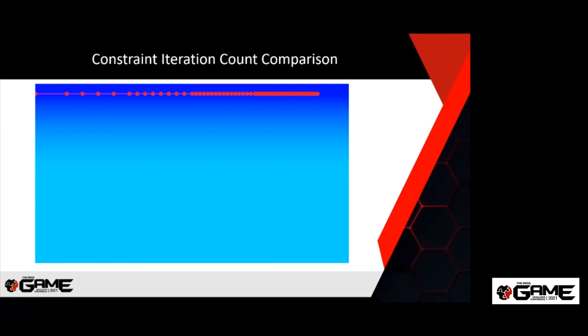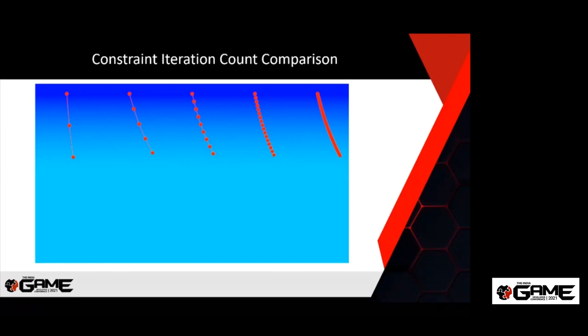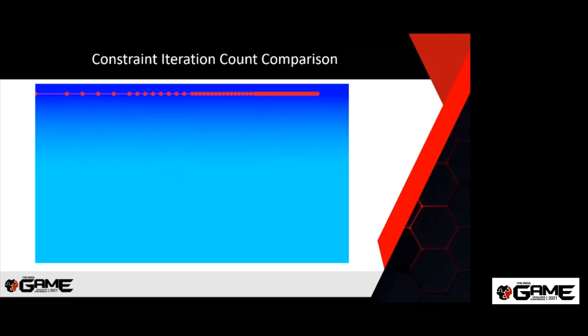More constraint solving iterations means more computational cost. With only one iteration per frame the ropes look very elastic and stretchy, while with 64 iterations they're much stiffer. If you want to preserve the length of your rope and want constraints better solved, you can turn up the number of iterations each frame at that extra cost. But if you don't care and want the speed, you can definitely turn it down.